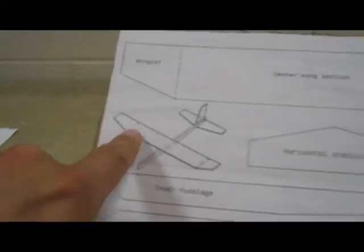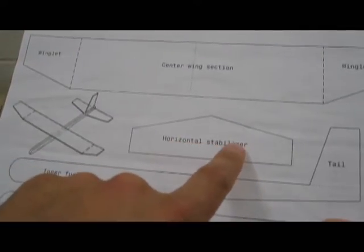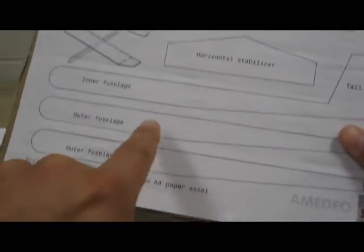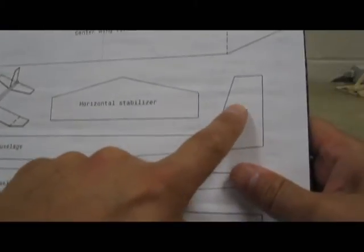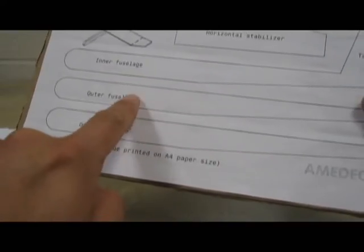You have your center wing section. The tips of the wings have winglets. These are going to get folded up. You have the horizontal stabilizer, which is sort of the tail right here. And then you have an inner fuselage with the tail here. You have two outer fuselages.